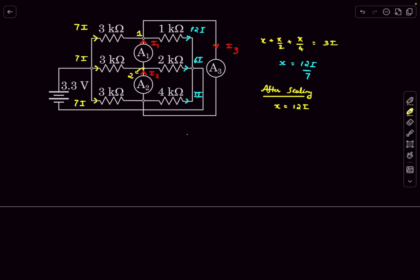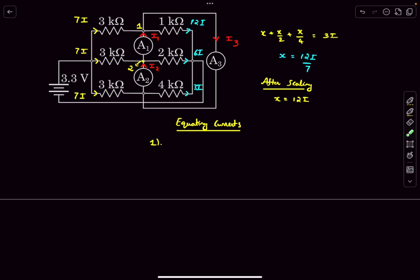So at junction 1, the current entering is 7i plus i1 and the current leaving is 12i plus i3. So from here we get i1 minus i3 equals 5i. And now for junction number 2, the current entering is i2 and 7i, and the current leaving is 6i and i1.